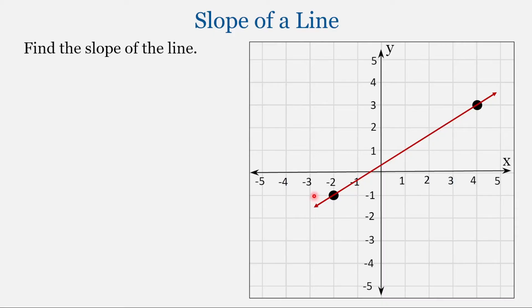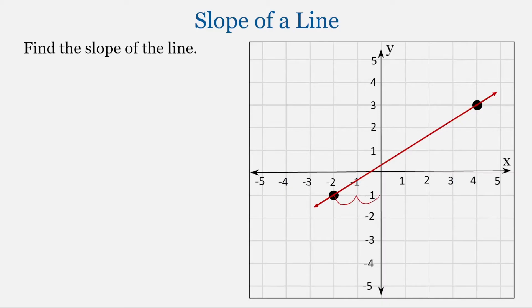Now there are multiple ways of finding the slope of a line. How I do it is I start at the leftmost point. From this point, I'm going to move to the right in the positive direction until I reach the grid line that represents the vertical line through the second point. As I'm doing this, I'm counting: 1, 2, 3, 4, 5, 6.